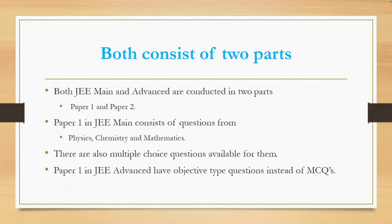Both JEE Main and Advanced consist of two parts. Both are conducted in two parts, namely Paper 1 and Paper 2. Paper 1 in JEE Main consists of questions from subjects like Physics, Chemistry, and Mathematics, and includes multiple choice questions. On the other hand, Paper 1 in JEE Advanced has objective type questions instead of MCQs from the same subjects.